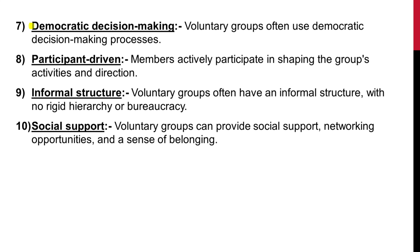Seventh is democratic decision-making — voluntary groups often use democratic decision-making processes. Eighth is participant-driven — members actively participate in shaping the group's activities and direction. Ninth is informal structure — voluntary groups often have an informal structure with no rigid hierarchy or bureaucracy.